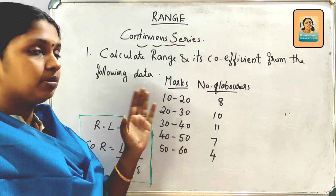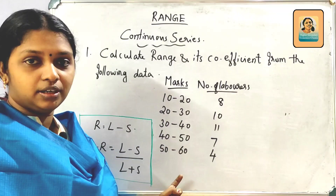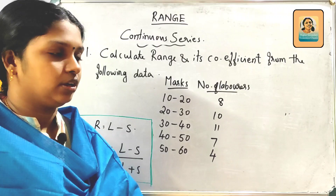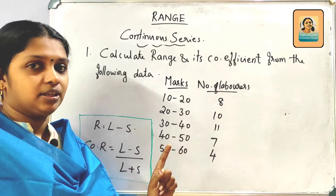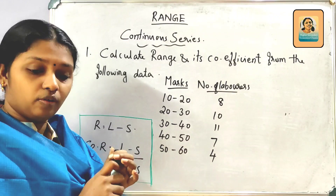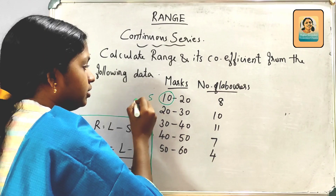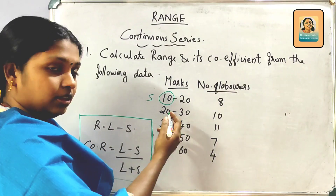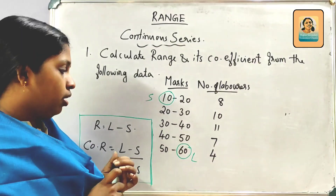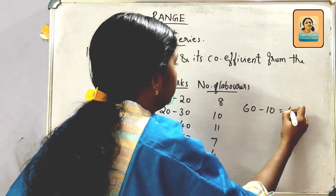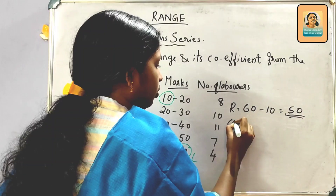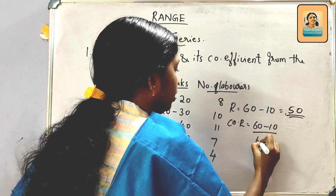Continuous series — same question. Here, the x-value is used. The lower limit of the first class is the smallest value, and the upper limit of the last class is the largest value. The largest value is 60 and the smallest value is 10. So Range = L minus S = 60 minus 10 = 50. Coefficient of Range = 60 minus 10 divided by 60 plus 10.